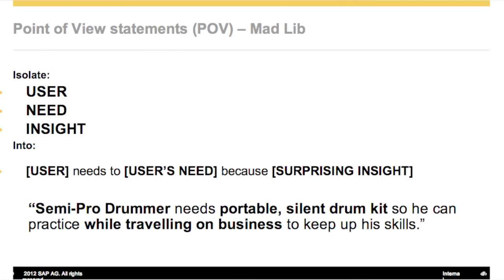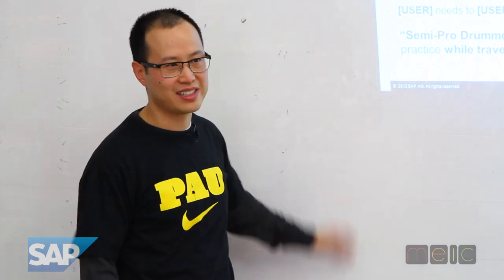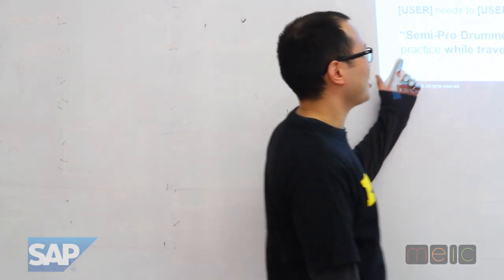What we want to do is create a point of view statement. This is the part that is very specific to design thinking — other frameworks may have slight twists on it. Even SAP has some slight twists, but I'm giving you the d-school version — the Stanford d-school. The point of view statement can be done in a couple of methods. The first is the mad lib: you fill in user, need, and insight. An example would be: 'Semi-pro drummer needs a portable silent drum kit so he can practice while traveling on business to keep his skills up.'